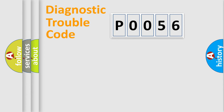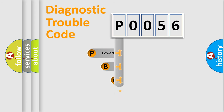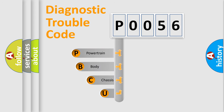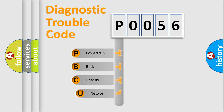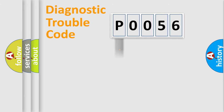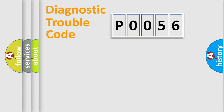Let's do this. First, let's look at the history of diagnostic fault code composition according to the OBD2 protocol, which is unified for all automakers since 2000. We divide the electric system of the automobile into four basic units: Powertrain, Body, Chassis, and Network.